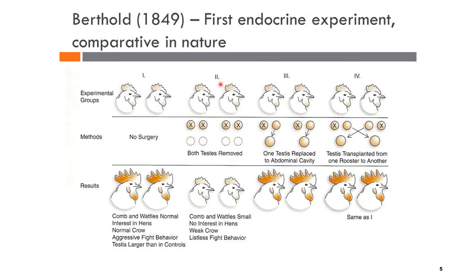This diagram shows the first endocrine experiment conducted by Arnold Berthold in the year 1849. This experiment aimed to demonstrate the role of hormones in animals, particularly the hormone testosterone, in roosters. Specifically, it aimed to identify the effects of testosterone on behavior through castration of roosters.